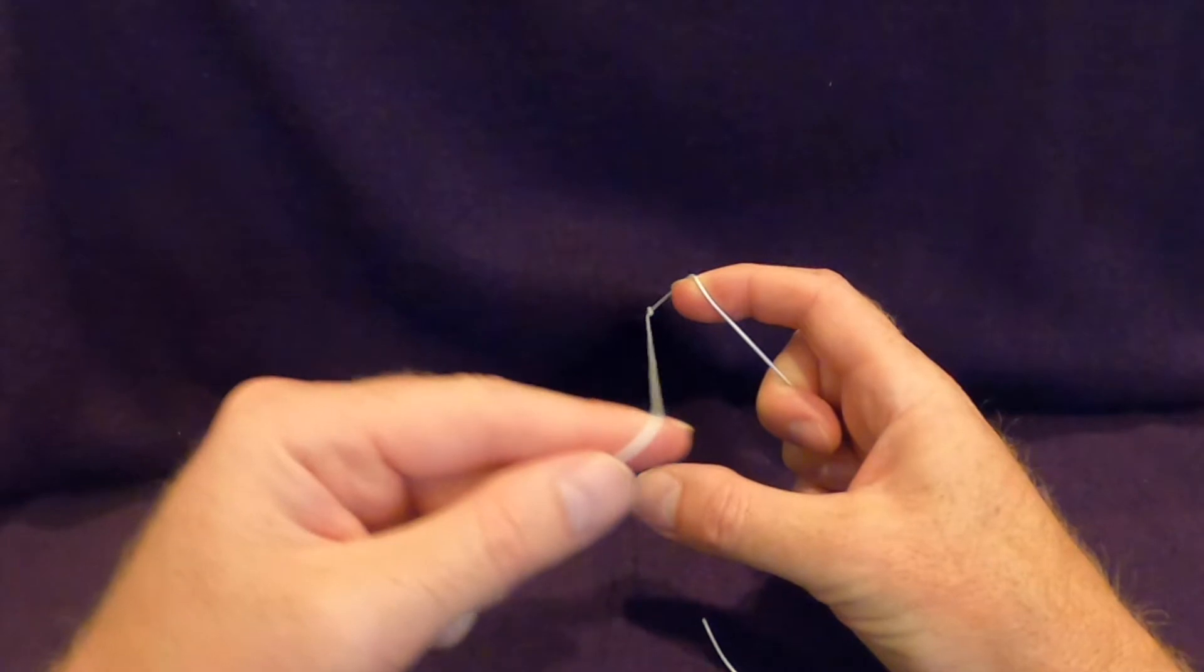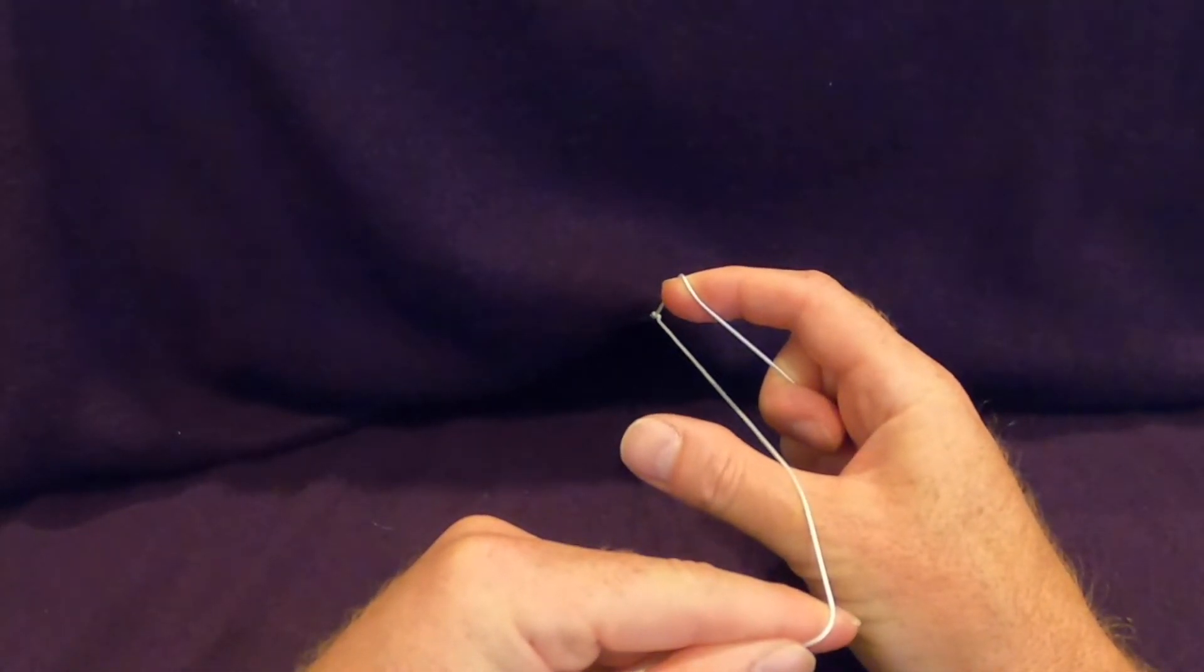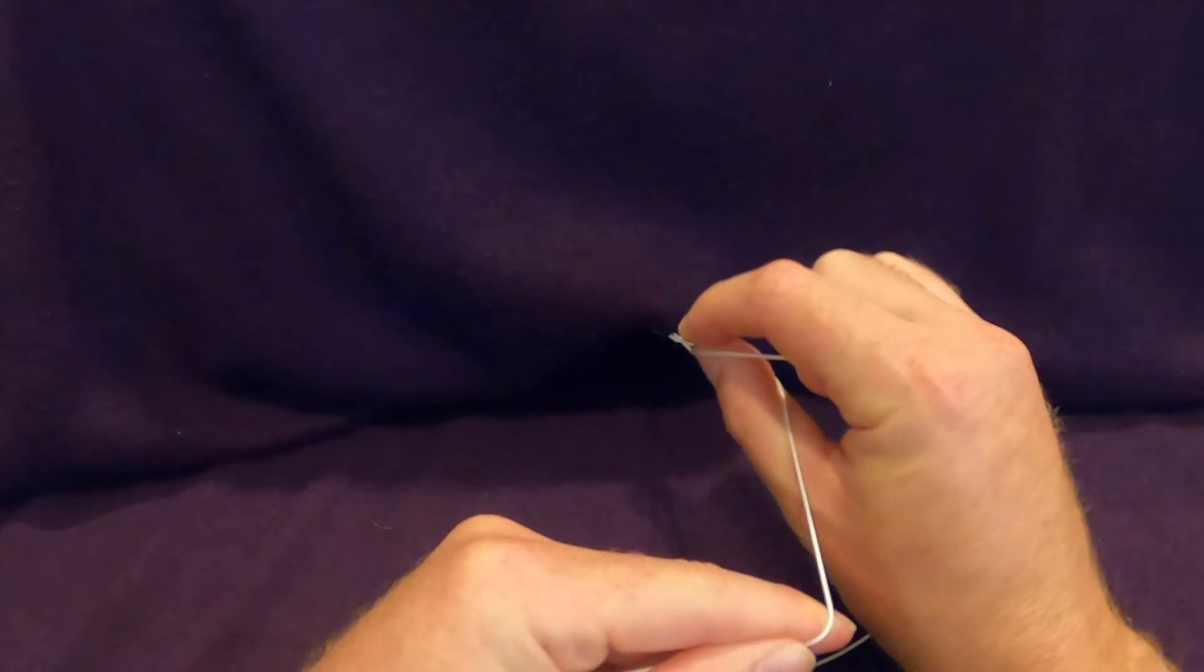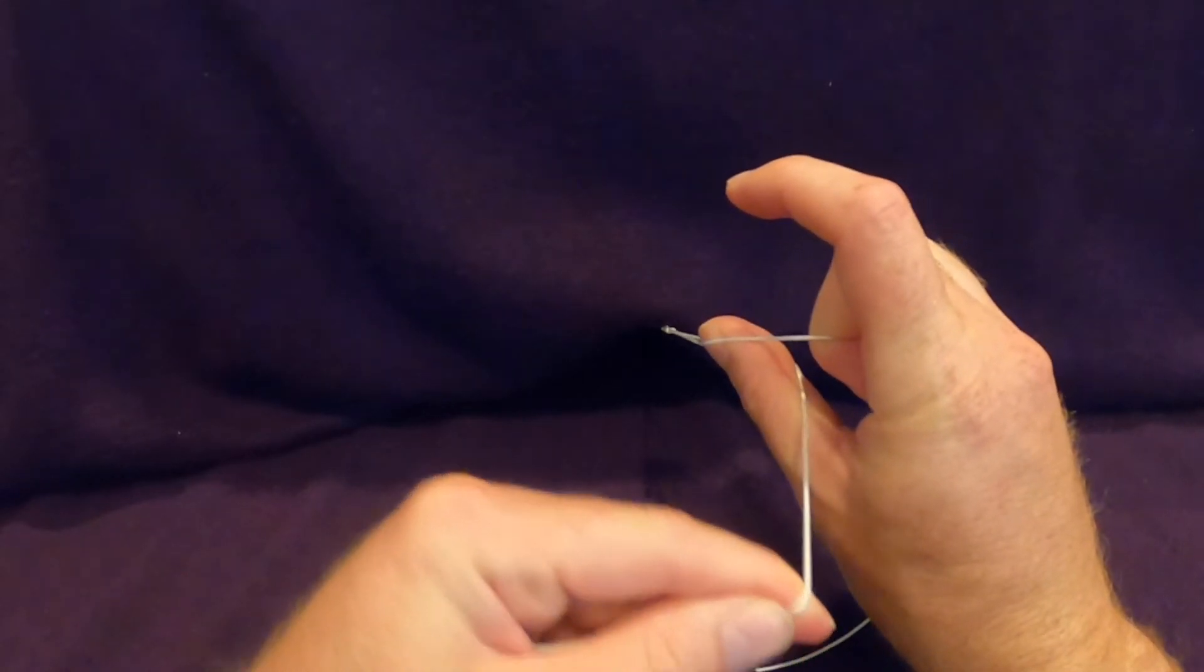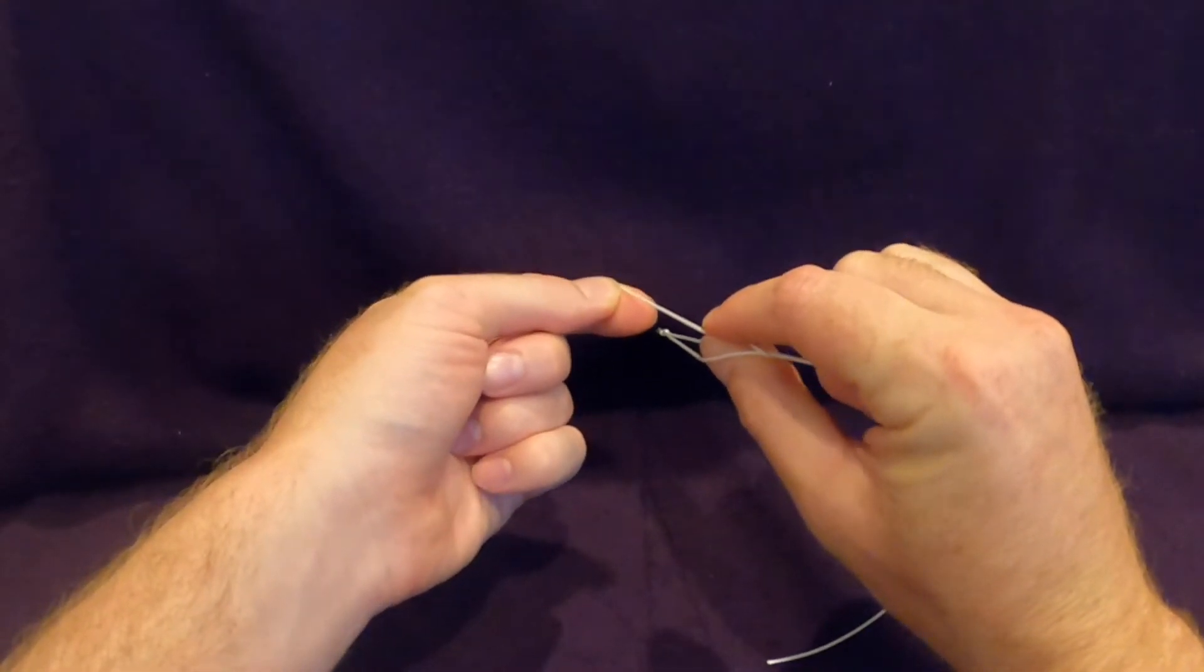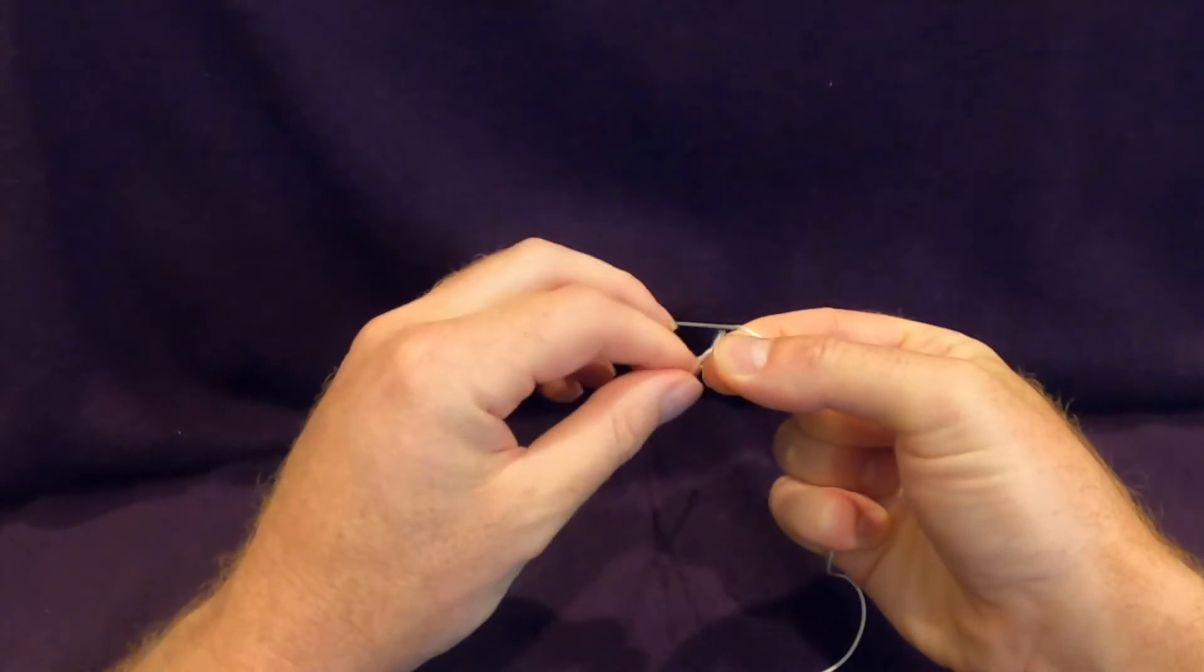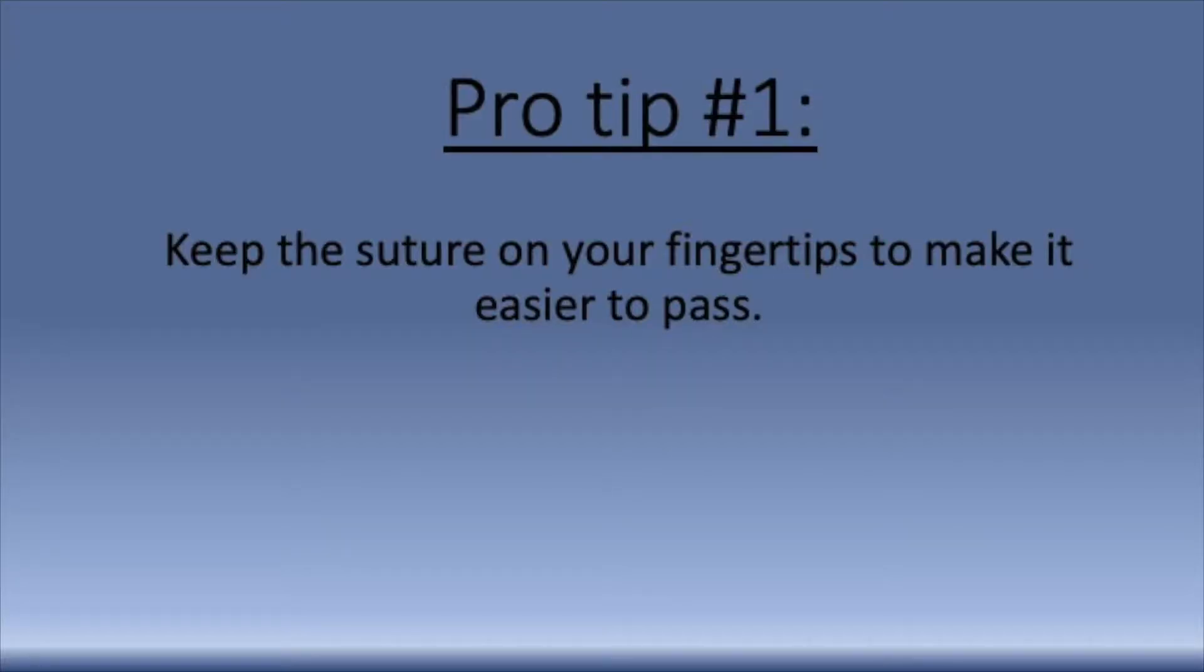Let's go through this again a little bit slower. Once again we start with a C. Watch in slow motion as the fingers close, the hand rotates, then the suture that's on the index finger will then move on to the thumb. The fingers open and this allows the suture to be passed once again between the thumb and index finger. As the fingers rotate, the tail is passed through the loop and the knot can be cinched down. Keeping the suture on your fingertips will make it easier to pass through the loops.